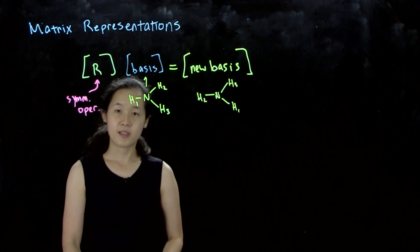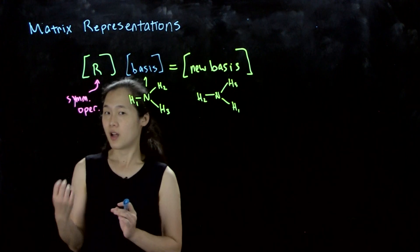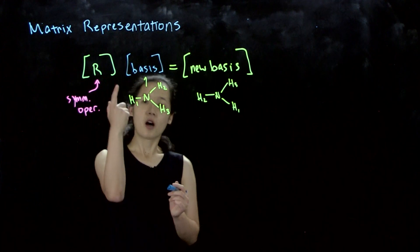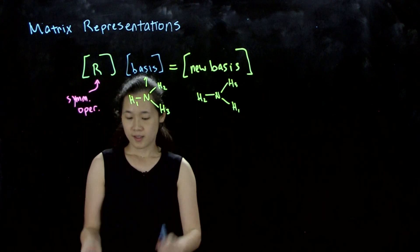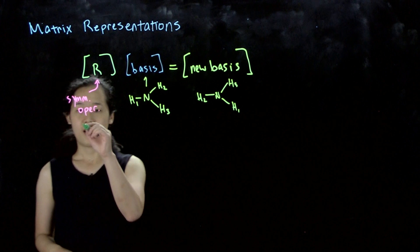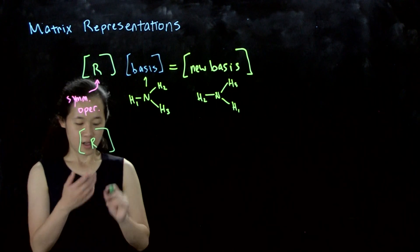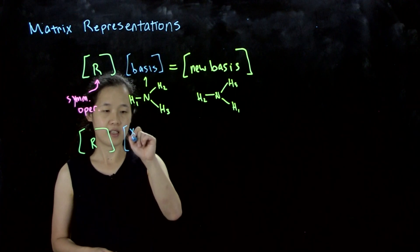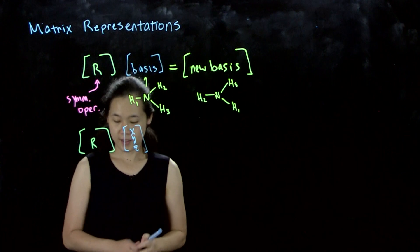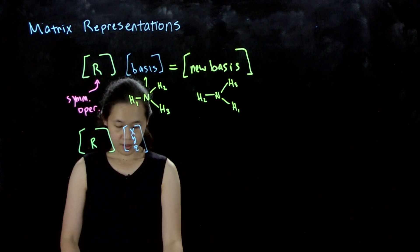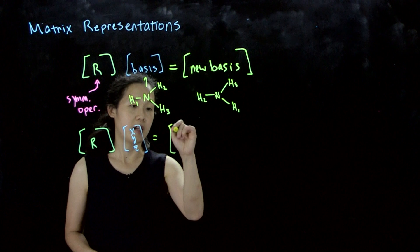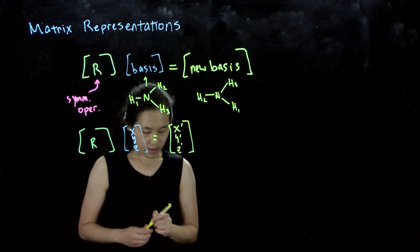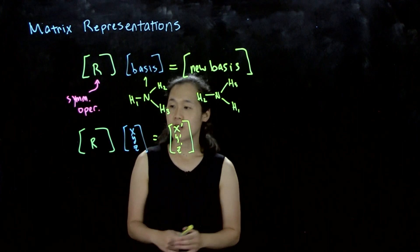We can make our basis anything we want - orbitals, bonds, or atoms. To make it more universal, we could use our basis as the XYZ coordinates. We can represent it as matrix R operating on our XYZ coordinate system, which becomes a new coordinate system X prime, Y prime, Z prime.